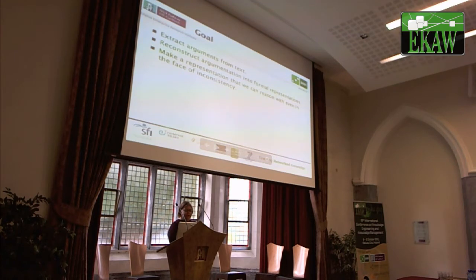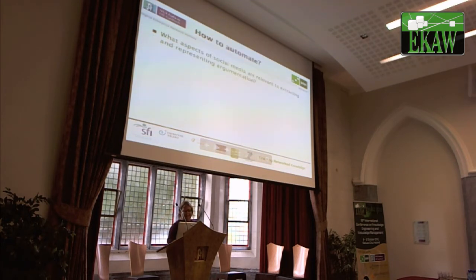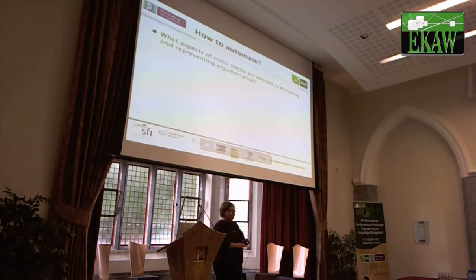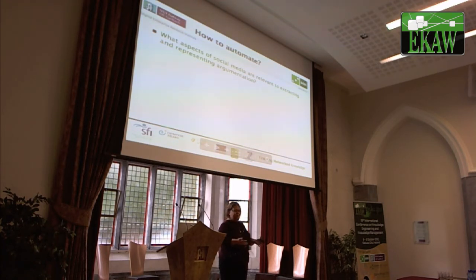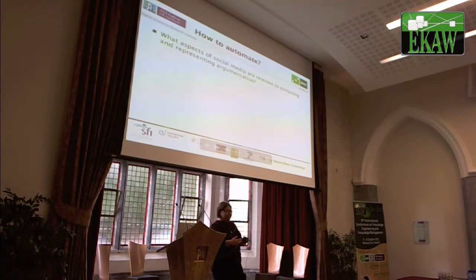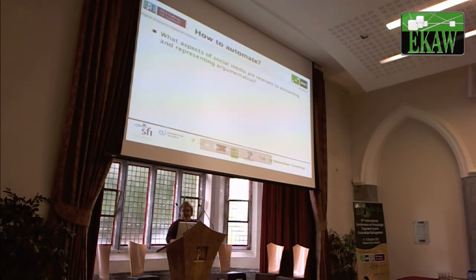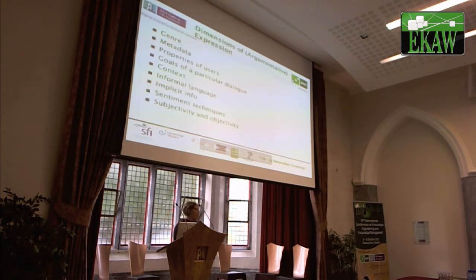So to recap: extract arguments from text, reconstruct argumentation into formal representations, make a representation we can reason with even in the face of inconsistency. Now, the absolute state of the art for doing this is by hand. For an hour of text, there's a postdoc in Scotland who spent three weeks doing a careful analysis of an hour-long news program. The same group had about ten people working on a similar news program in real time. It's a huge amount of manual work. So if we want to automate this, what are the things we need to look at?